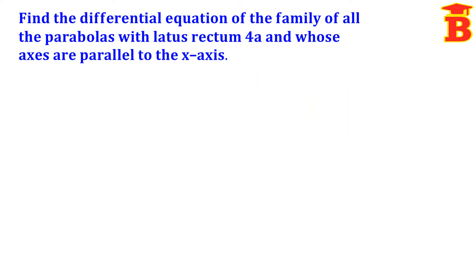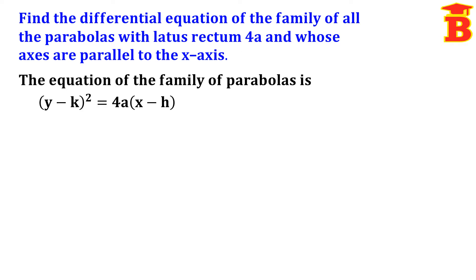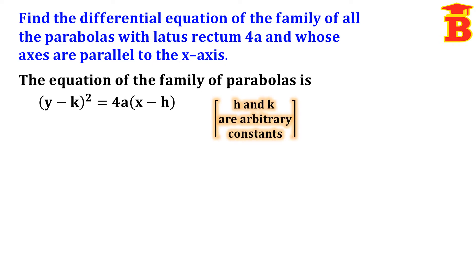Next problem: find the differential equation of the family of all parabolas with latus rectum 4a and whose axes are parallel to the x-axis. Since the axes are parallel to the x-axis, the general form is (y − k)² = 4a(x − h), where h and k are the vertex. Since there are two constants h and k, we have to differentiate two times.